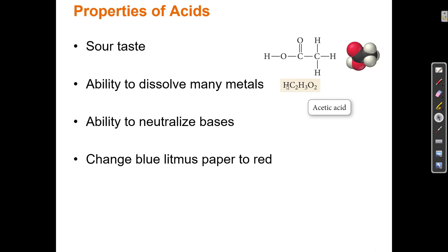This is the structure of this molecule: HC2, here are the two Cs, these three Hs, and then O2. The H that comes first is the acidic H — this one is bonded to an oxygen. The three other Hs are bonded to a carbon. Being bonded to an oxygen makes this H an acid, and being bonded to a carbon means these Hs are not acidic. Just because there are Hs in a formula doesn't mean they're all acidic.